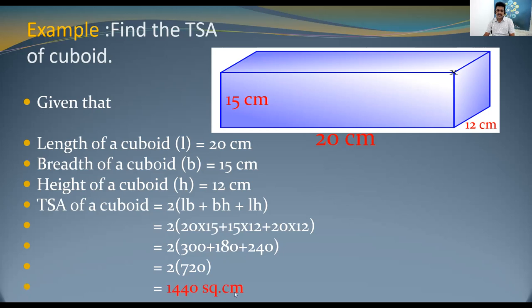The total surface area of the cuboid is 1440 square centimeters. Since this is an area, we always use square units — in this case, square centimeters. I hope you have understood this example.